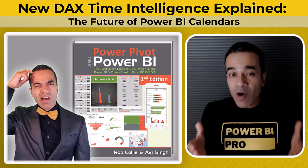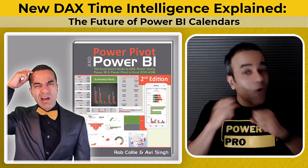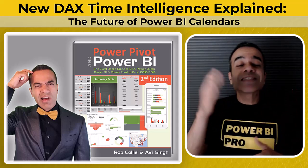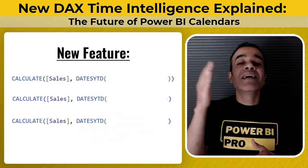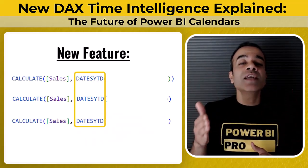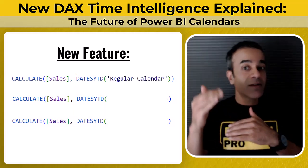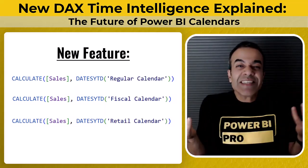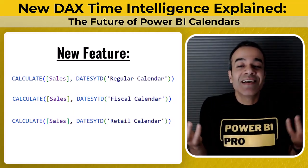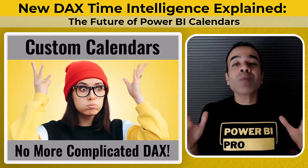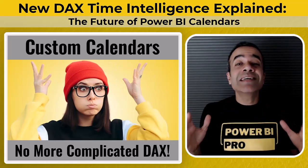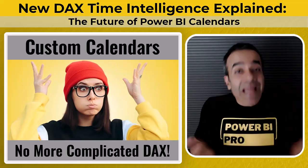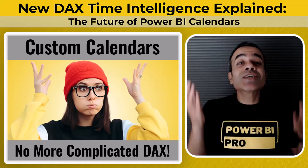And now, with this new feature, all that goes away. You can simply say datesYTD with the regular calendar, fiscal calendar, or retail calendar — and that's it. No more complicated DAX. It's clean, readable, and it just works.